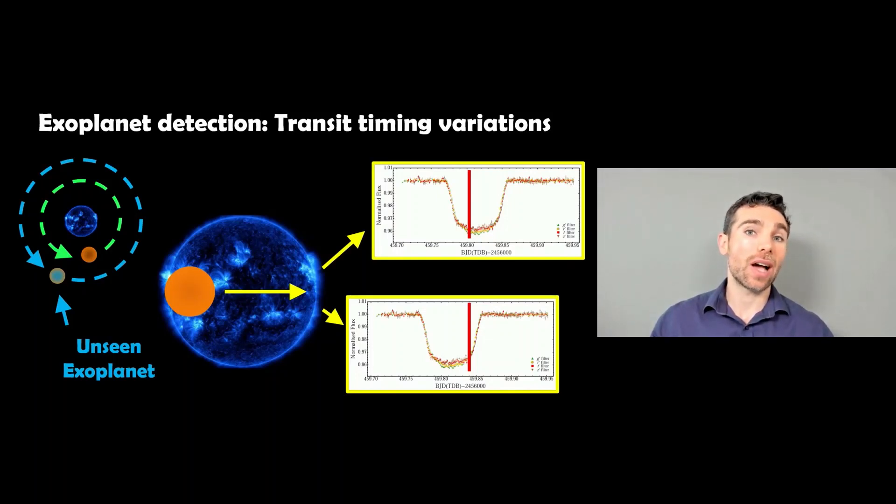Welcome to this video where I'm going to have a look at another method you can use to detect exoplanets. For this one, it's going to be detecting an exoplanet that we wouldn't necessarily be able to detect directly with a transit, and it's called transit timing variation.